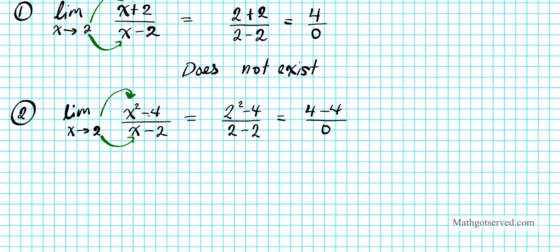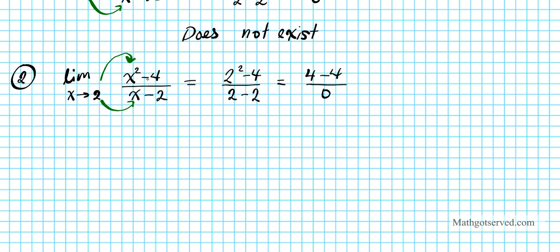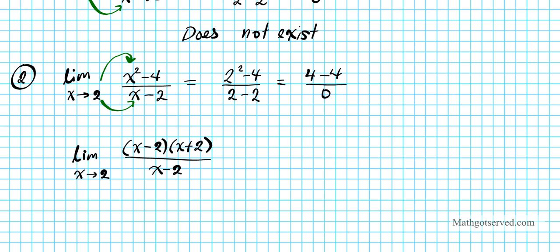So we need to go back and ask ourselves, can I reduce this? You notice that x squared minus 4 is a difference of squares — it can be factored. So I can rewrite this as x minus 2 times x plus 2 divided by x minus 2, with the limit as x approaches 2. You notice that these two factors are identical, so they cancel out. This discontinuity caused by the expression in the denominator is a removable type of discontinuity.